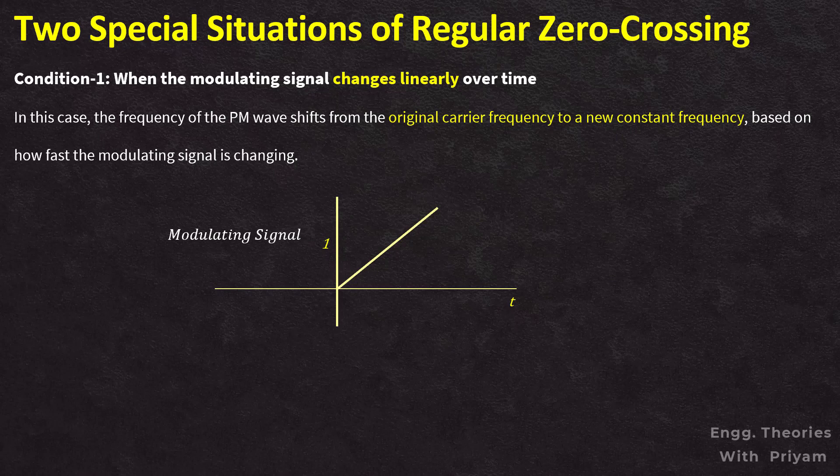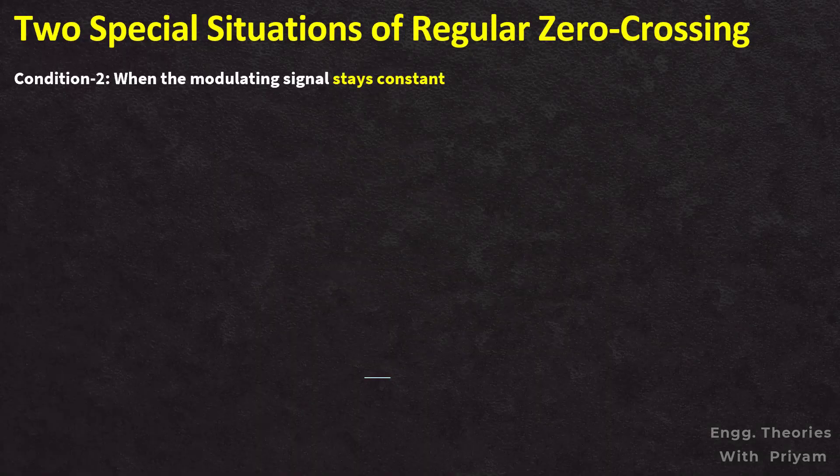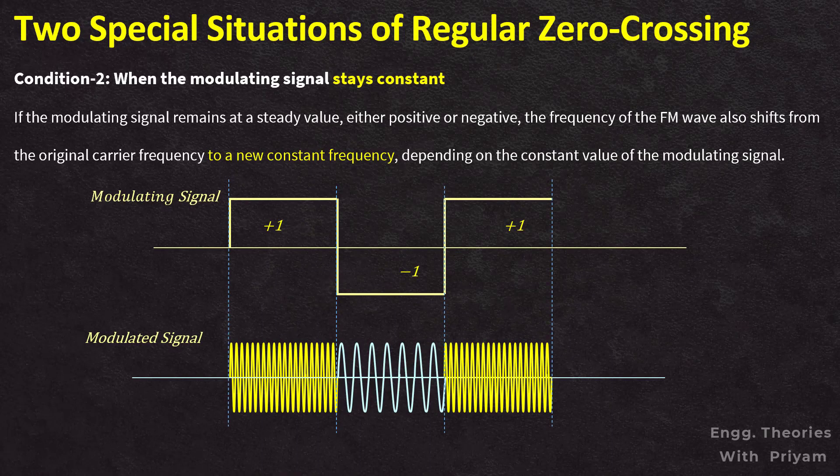The second condition where zero crossing irregularity does not occur is when the modulating signal stays constant. If the modulating signal remains at a steady value, either positive or negative, then the frequency of the FM signal shifts from the carrier frequency to a new constant frequency. We saw this in the square wave example: when the square wave was at plus 1, the FM signal had a constant frequency; when at minus 1, it also had a constant frequency — different from the plus 1 case, but still constant throughout that interval.